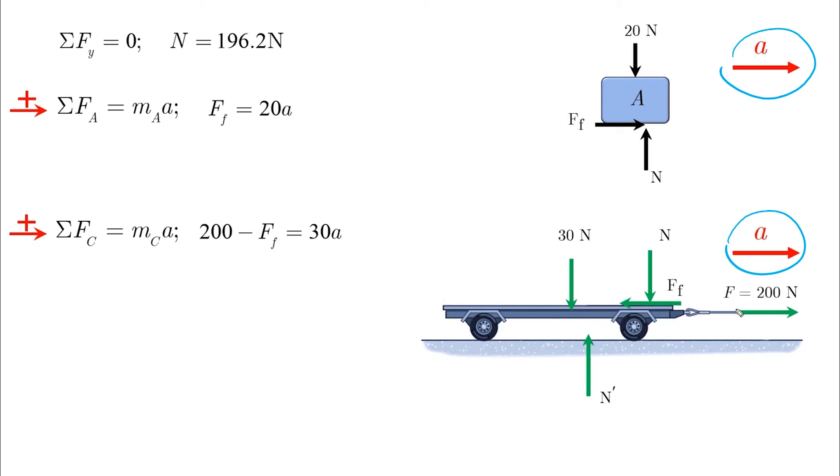And now we have two equations with two unknowns. We take the friction force from this equation, which is 20 times A. We apply it here, and then we get this equation, only with A as a variable. So we solve for A, and then we solve for the friction force.